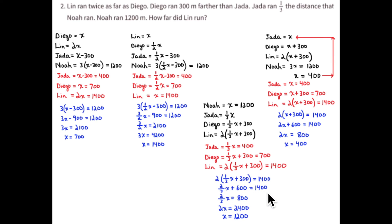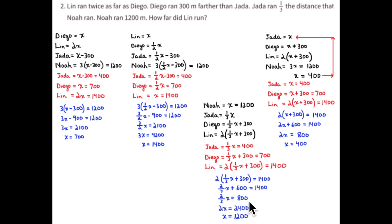Or using the distributive property: two-thirds x plus 600 equals 1,400. Two-thirds x equals 800. So two-thirds of some number equals 800. Multiplying by three gives 2x equals 2,400, so x equals 1,200. Going back: two-thirds of some number is 800 — take 1,200 divided by 3, that's 400, and two of those 400s is 800. Take 800 divided by 2 — that's 400 — and three of those 400s is 1,200. Just have to practice thinking through it.